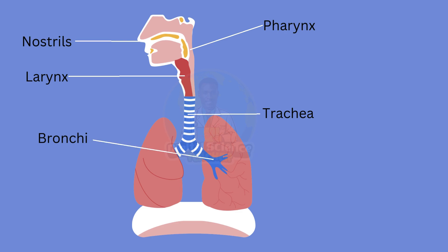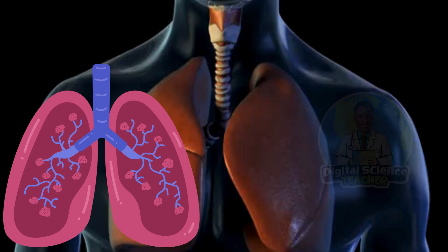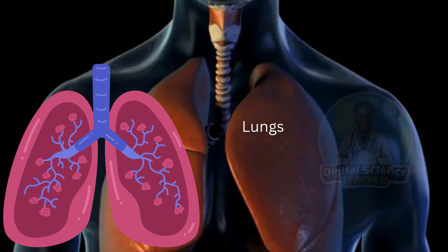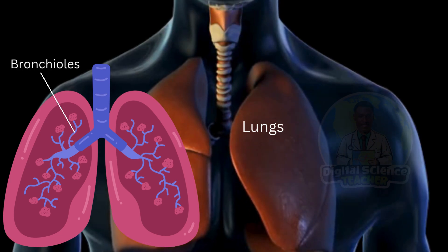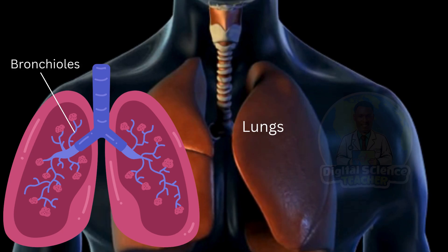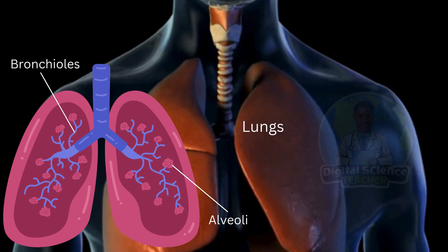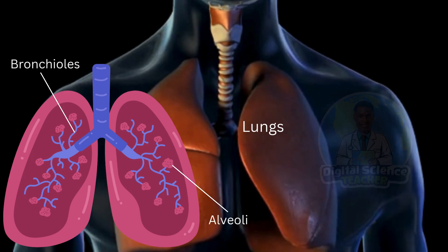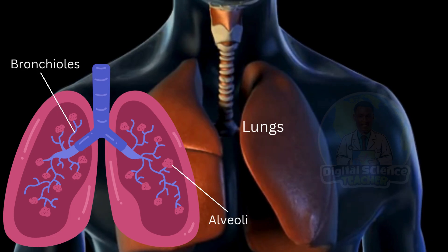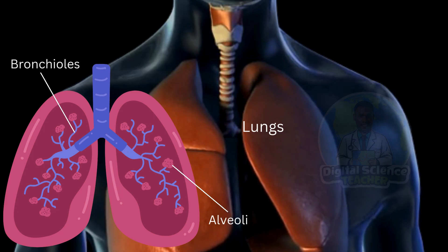The trachea branches into two tubes called bronchi. Both the trachea and the bronchi have free rings of cartilage, which strengthens them and prevents them from collapsing when the pressure of the air inside is low. Each bronchus leads into the lungs, where it branches into small tubes called bronchiolus. The bronchiolus leads to numerous air sacs called alveoli, and the alveoli are richly supplied with blood vessels and are the sites where the actual gaseous exchange takes place.